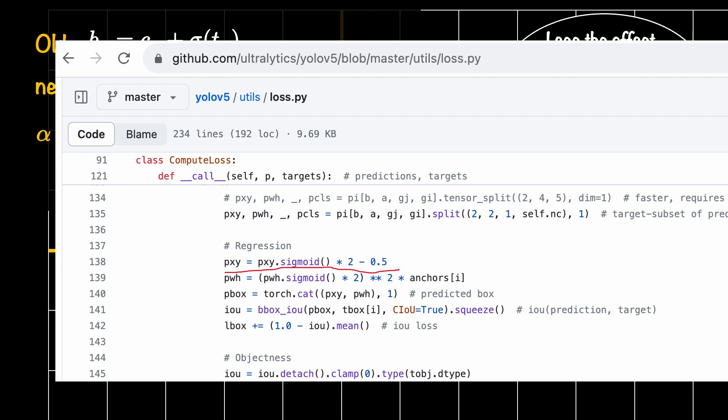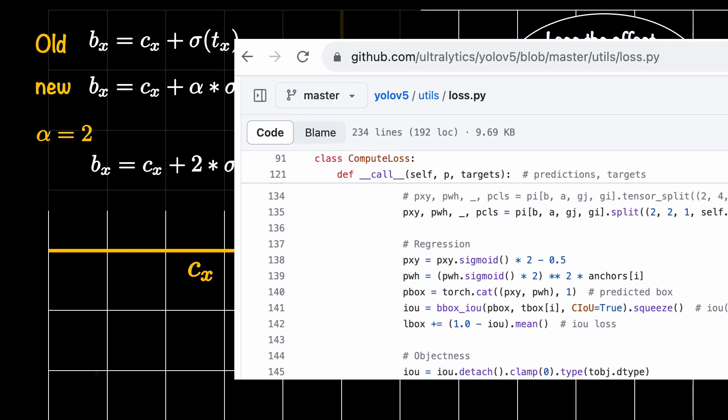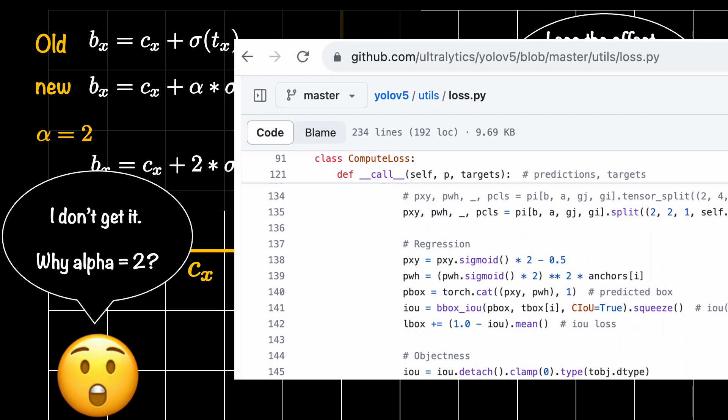And the same thing is happening in many other implementations of YOLO, whether they are the copies of YOLO v5 repository by other people or YOLO v7 and many other implementations. Essentially they all are using the value of alpha to be 2. And obviously it is natural to wonder why alpha should be equal to 2. What is so special about it? Could it take another value?